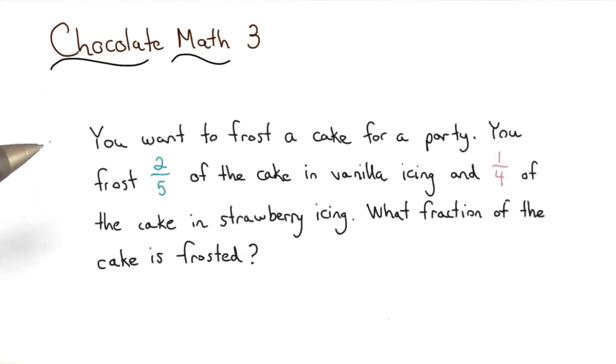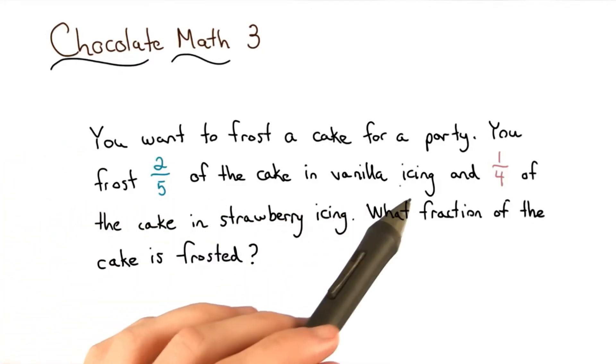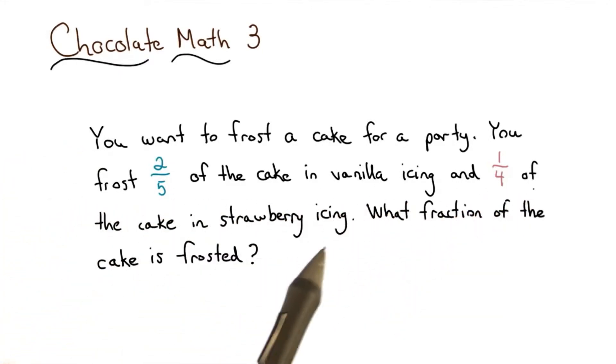Here's our third chocolate math problem. You want to frost a cake for a party. You frost two-fifths of the cake in vanilla icing, and one-fourth of the cake in strawberry icing. What fraction of the cake is frosted?